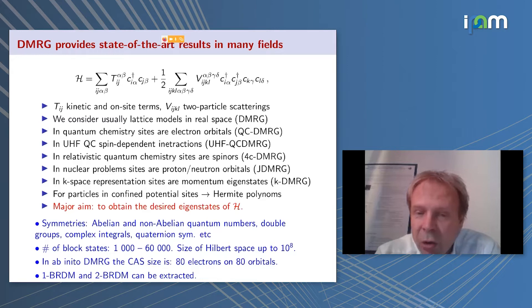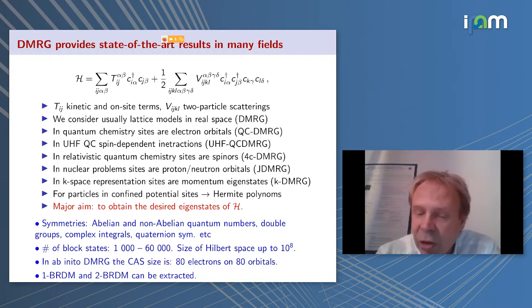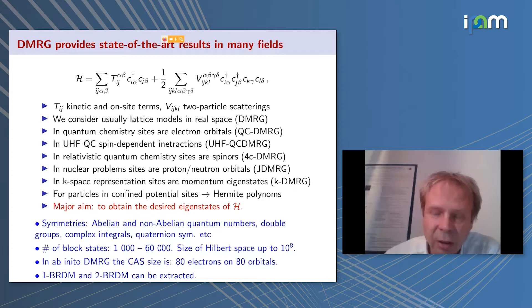Our codes can treat these cases with some extensions, and the main idea is that this should be basis independent. In the ab initio version, we can now correlate up to 80 electrons on 80 orbitals. We also have access to one- and two-particle reduced density matrices, which are important for extracting information about correlations.